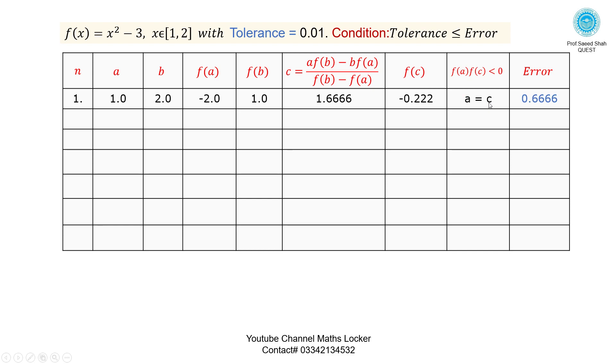Error: How can we get the error? The present value is 1.6666, previous value is 1. So 1.6666 minus 1 equals 0.6666. Second iteration: A is 1.6666 because A equals C.